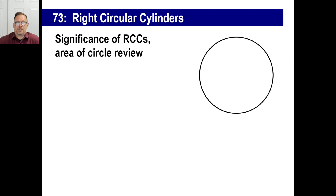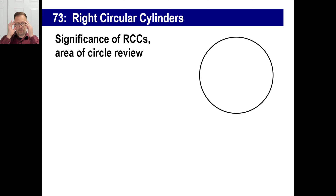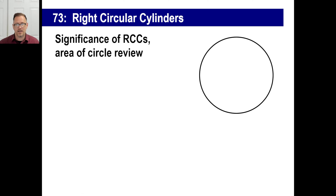Hey guys! Today is a geometry lesson and this is one of the ones that Saxon continues year after year. Take a little time and get this down — you'll just keep doing this in Algebra 1 and Algebra 2. It even shows up sometimes in Advanced Math. A right circular cylinder basically looks like a can of beans or soup. A lot of these structures are circular instead of squares or triangles because they handle pressure and weight a lot better.